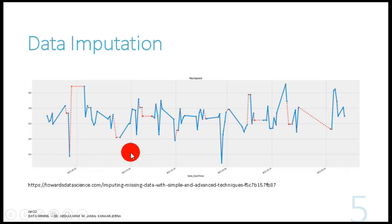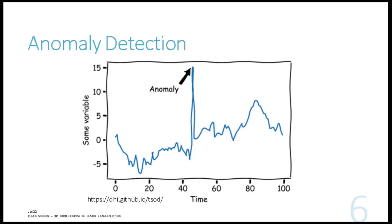Time series can also be applied to do data imputation. If you have a figure with missing values, you might be interested in finding those missing values by applying time series. It can also be used to spot anomalies — outliers, values that deviate too much away from the norm. If we look at a variable captured over time and there is suddenly a hike or peak, this may indicate an anomaly or that some problem occurred.